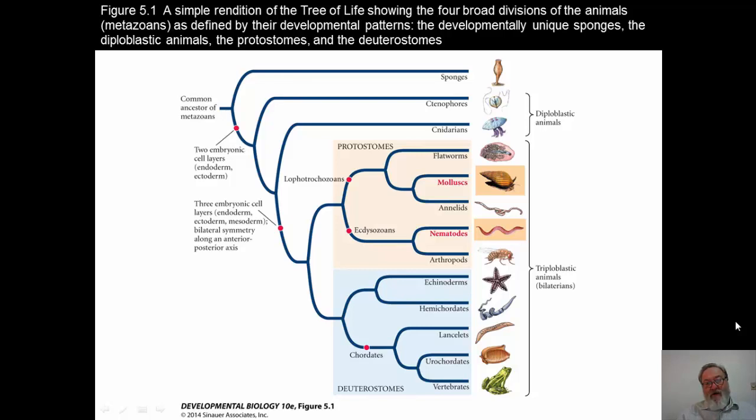Those germ layers are the ectoderm and the endoderm. And although they form structures that you might think of as coming from mesoderm, these structures have different origins than mesoderm. And the jellyfish, for example, the cnidarians, have contractile units that will allow those tentacles and the pulsations to allow them to swim. But nevertheless, it's a different mechanism for contraction than what we see in the muscle of vertebrates.